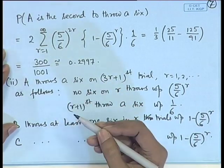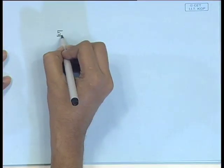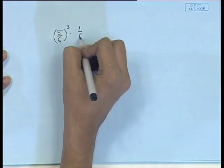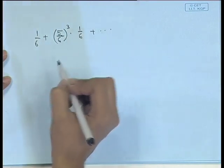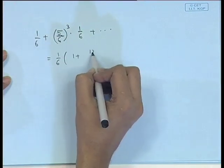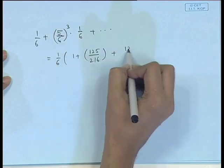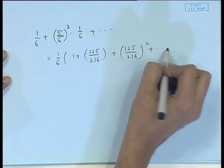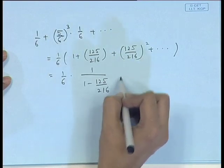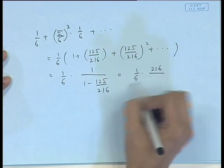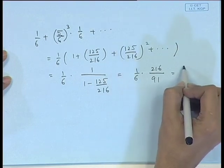We can also compute the probability that A is the first player to throw a 6. A must get a 6 on trial 1, 4, 7, etc. If he throws on the first trial it is simply 1/6. If on a later trial, none of A, B, or C got a 6 previously. This infinite geometric series equals (1/6) / (1 − 125/216) = (1/6) · (216/91) = 36/91.